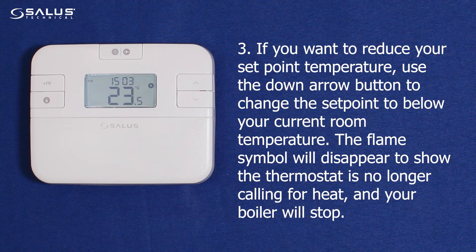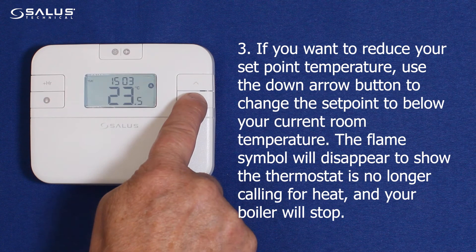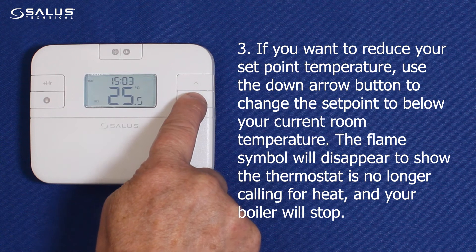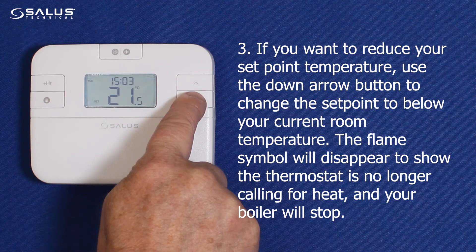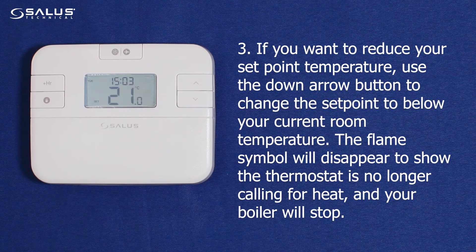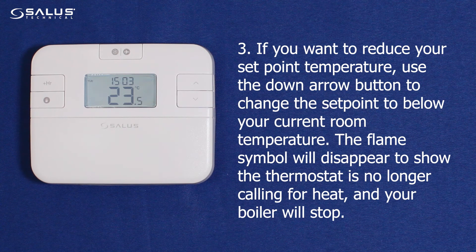3. If you want to reduce your set point temperature, use the down arrow button to change the set point to below your current room temperature. The flame symbol will disappear to show the thermostat is no longer calling for heat, and your boiler will stop.